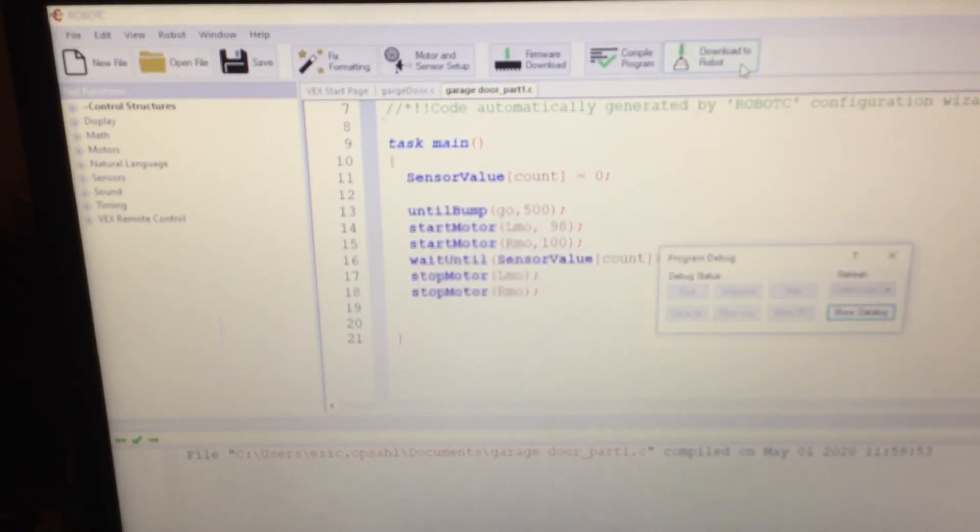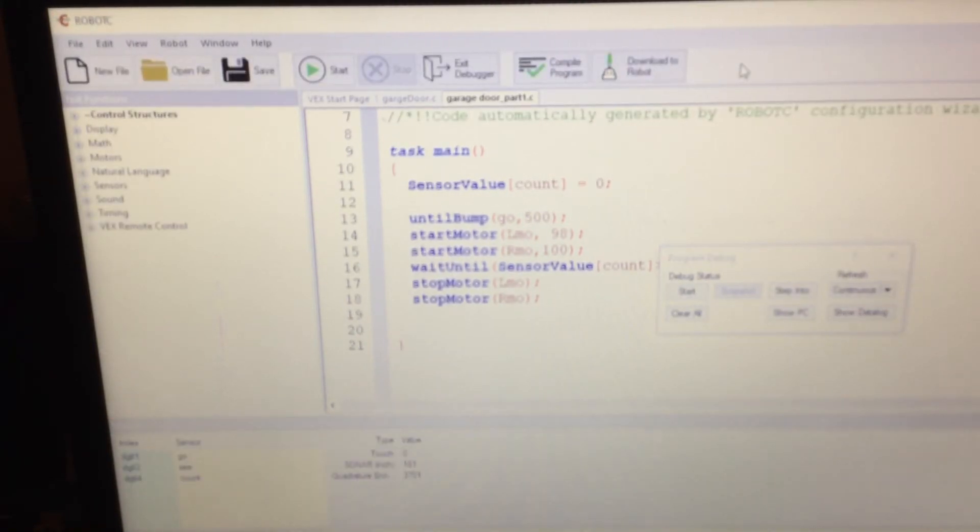If you kind of watch here too, it might or might not. Let's find out. Okay, see here? It says my current setting on my quadric encoder, 3,700. I push start, it goes to what? Zero. See that? Because task main, sensor value, count, zero, it's there. Okay. Unplugging robot.